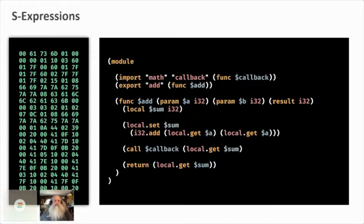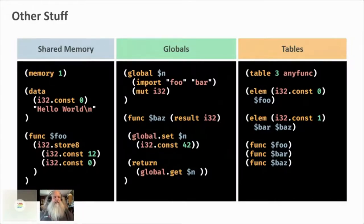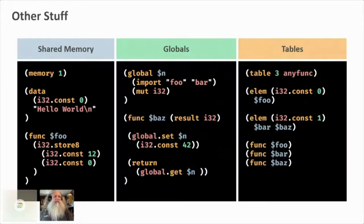You can use S-expressions to clean up your code and make your WebAssembly text format look a little more Lispy, which makes it actually a little more pleasant to program. There are other features in the syntax too: shared memory is a shared block of memory that JavaScript and WebAssembly can both see; globals are like shared memory but just an individual value; and tables are a way of doing lists of functions for dynamic binding - for polymorphism in C++ and languages like that.